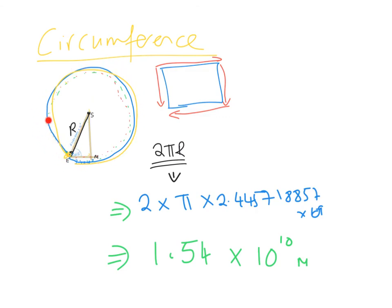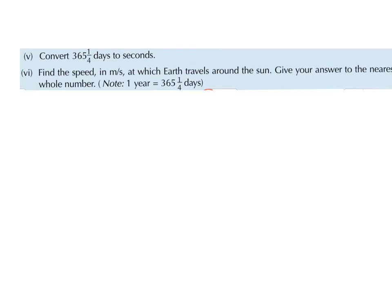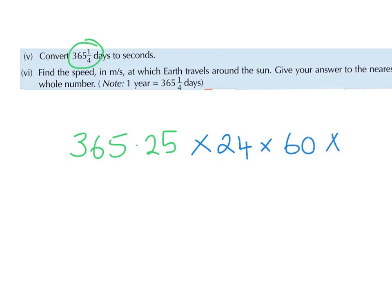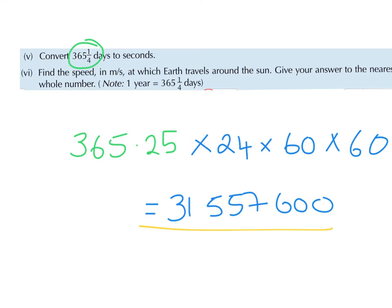Orbit just means going around in a circle — the earth never gets closer to the sun, so the distance stays the same, making it the radius. The whole distance traveled is the circumference. The next part says: convert 365 and one quarter days to seconds. We can write 365.25 days. Multiply by 24 hours, then by 60 minutes, then by 60 seconds.